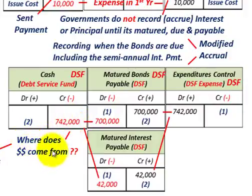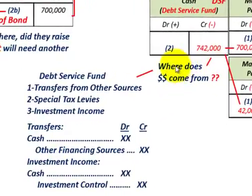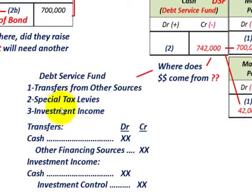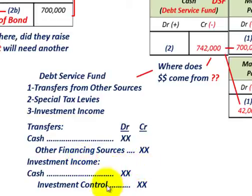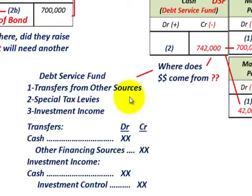The question is where does the $742,000 come from. In the debt service fund, funding can come from transfers from other sources, special tax levies, or investment income. For transfers, you record a debit to cash and credit other financing sources in the debt service fund. For investment income, you debit cash and credit an investment income control account. That covers our discussion of bonds issued at a discount and at a premium and how to account for them in governmental accounting to finance capital projects.